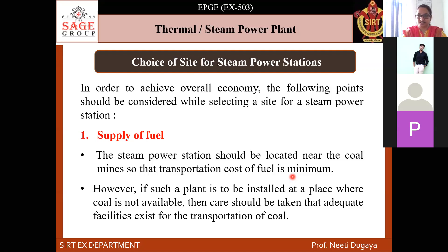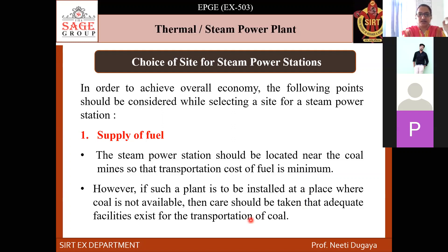In research, the term 'wheeling charges' refers to the transportation cost of fuel — whether by electric wagon, truck, or carriage wagon — all categorized under wheeling charges. You must select a location where coal mines are nearby to reduce transportation costs. If coal mines are not near, there should be adequate provision for transporting coal either by road or rail.